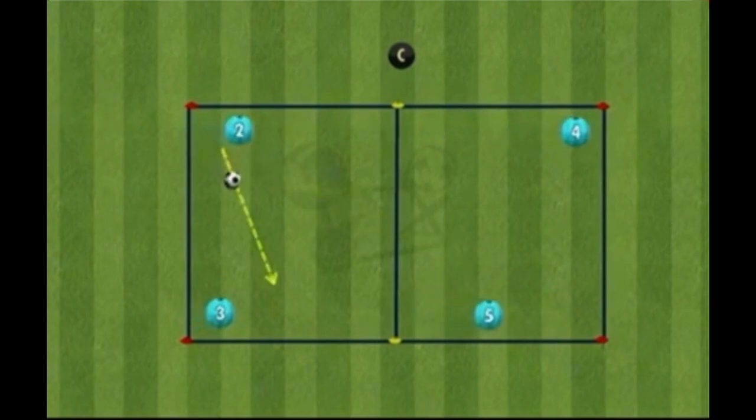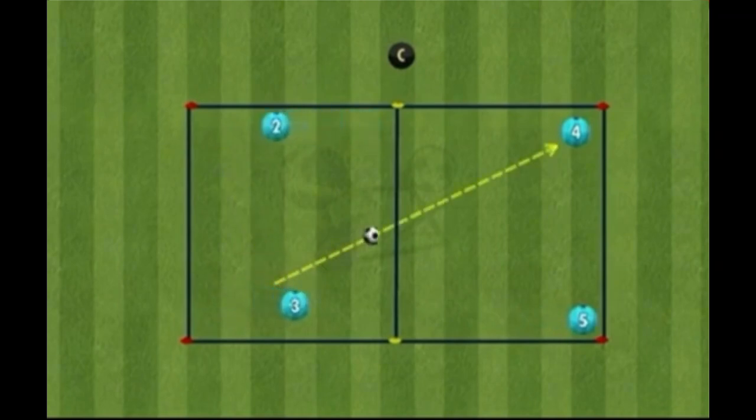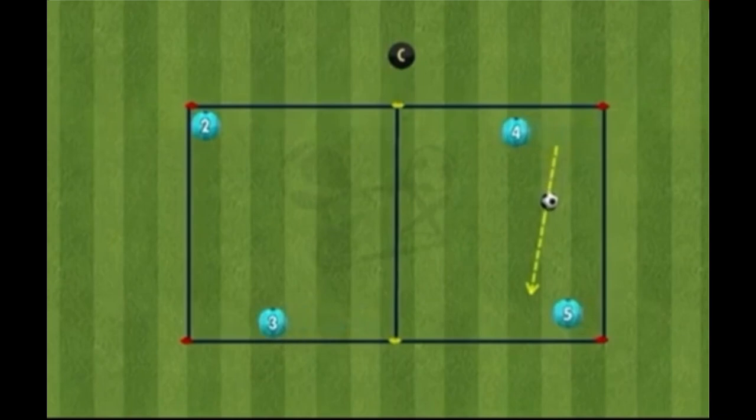Players work in pairs and create a pendulum movement. Every time a player passes the ball, they must sprint forward and touch the cone in front of them, then quickly shuffle back ready to receive the next pass.